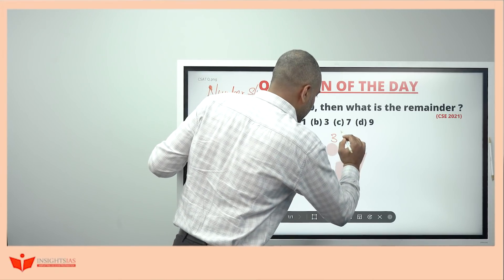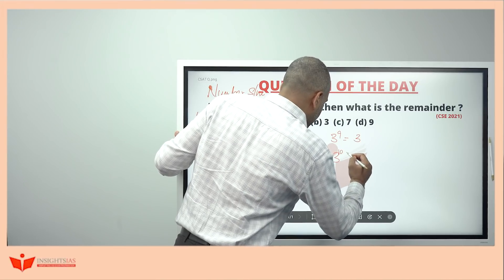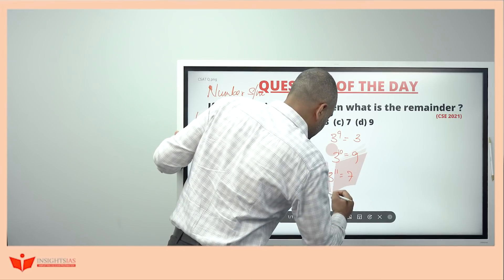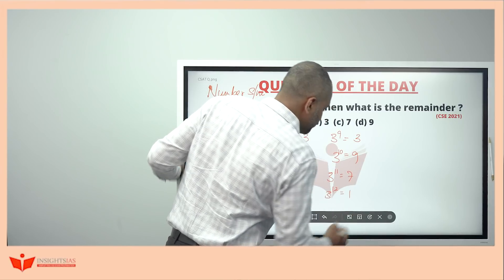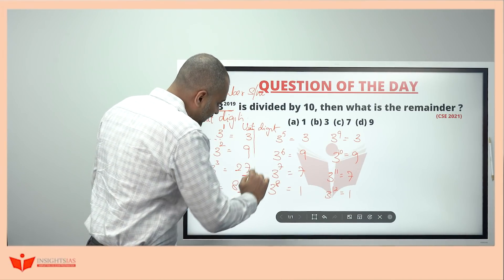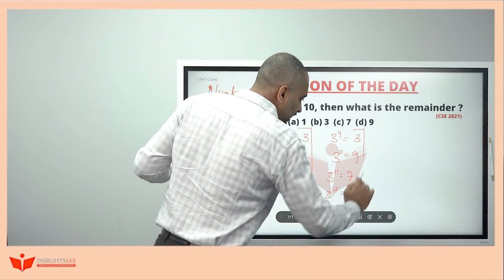Similarly, I am moving forward here. 3 power 9, unit digit is 3. 3 power 10, unit digit is 9. 3 power 11, unit digit is 7. 3 power 12, unit digit is 1. So, look here. Observe. What is happening? The unit digits are repeating again and again after a cycle of 4.